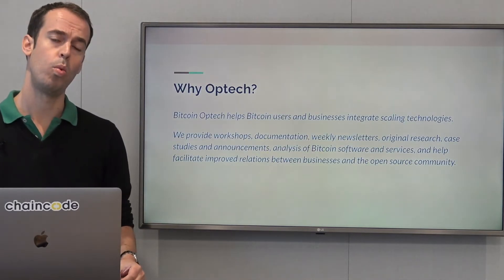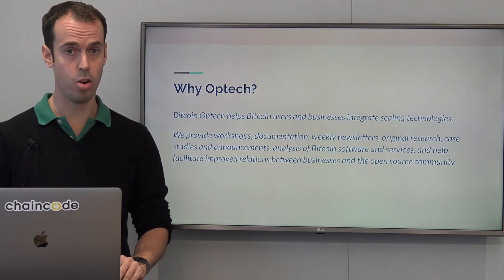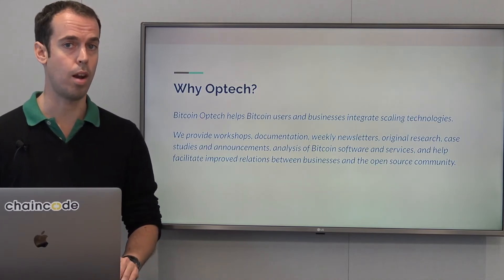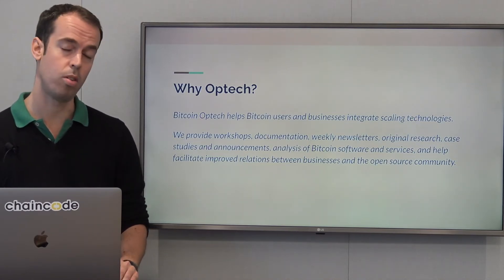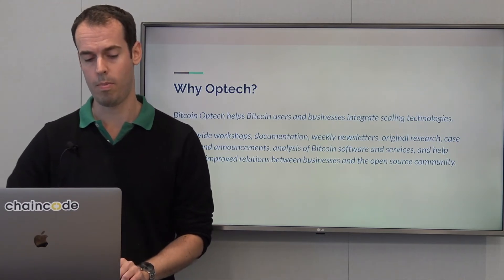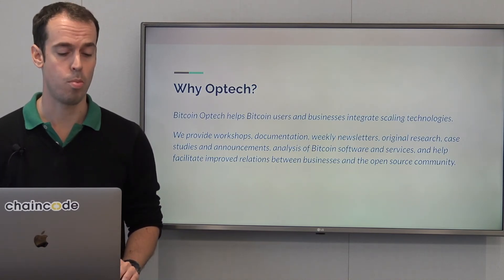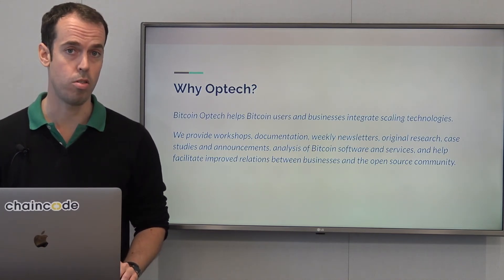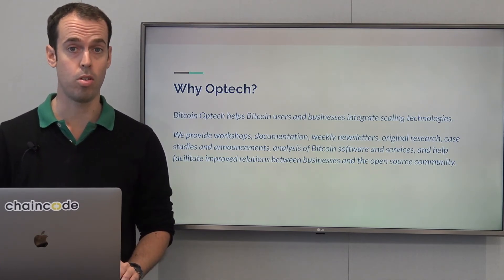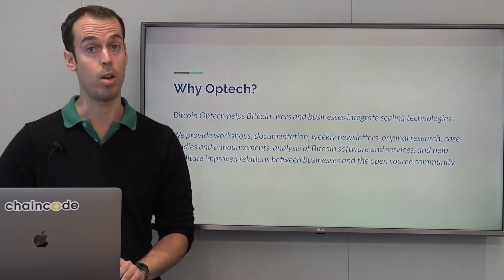So that's why we're talking about Schnorr Taproot today, but why is Optech involved? We started Optech in 2018 because we wanted to help Bitcoin companies adopt scaling technology. At that time, we were talking about things like SegWit, transaction batching, RBF, and CPFP, but we were always very excited about new technologies. We think Schnorr Taproot is a fantastic new technology, and if it does get adopted and activated by the Bitcoin community, it offers huge benefits in terms of scalability for Bitcoin businesses.